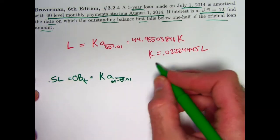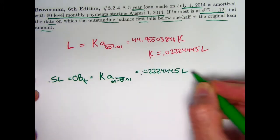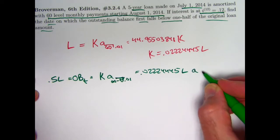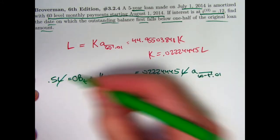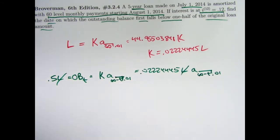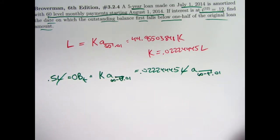Well, if we replace K by 0.022244445L, we indeed see that the value of L doesn't matter because it cancels from both sides. And what we're left with, if you think about it, it's going to be an exponential equation with unknown T here. And we can maybe solve that exponential equation with logarithms. And in fact, we can.